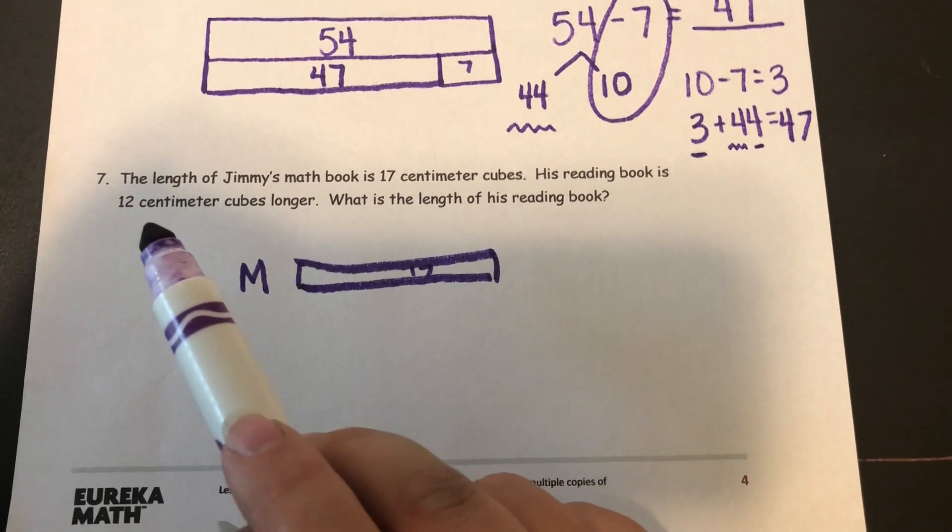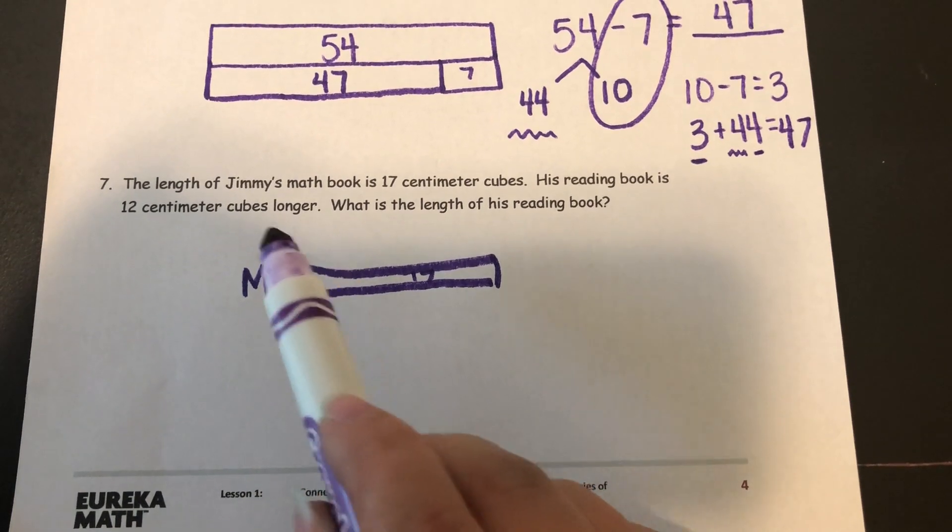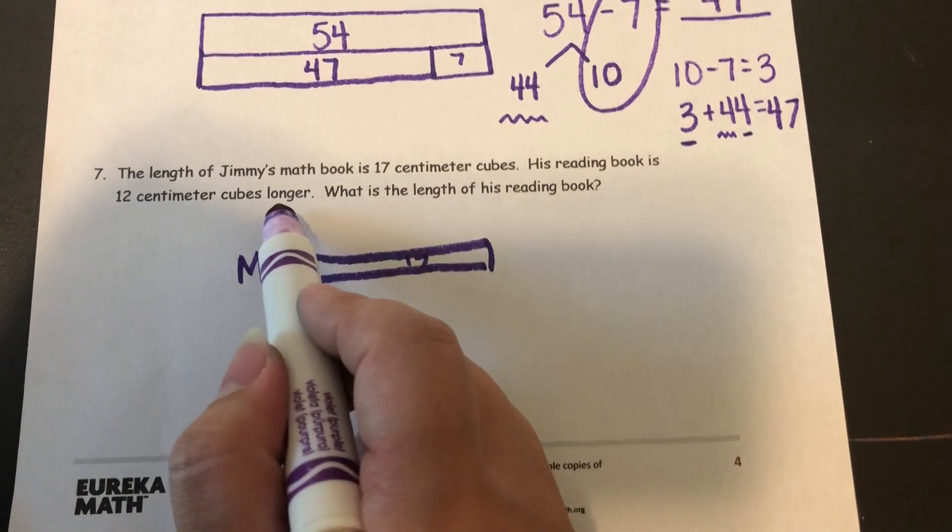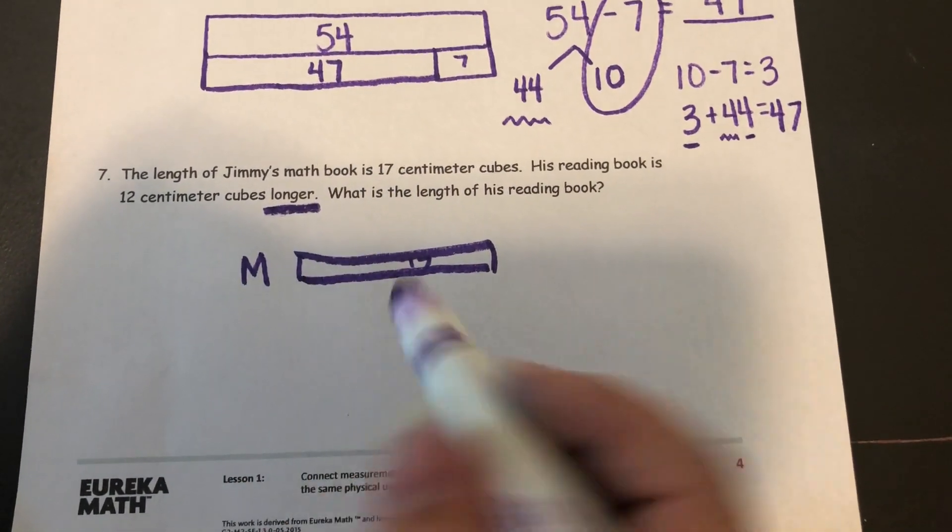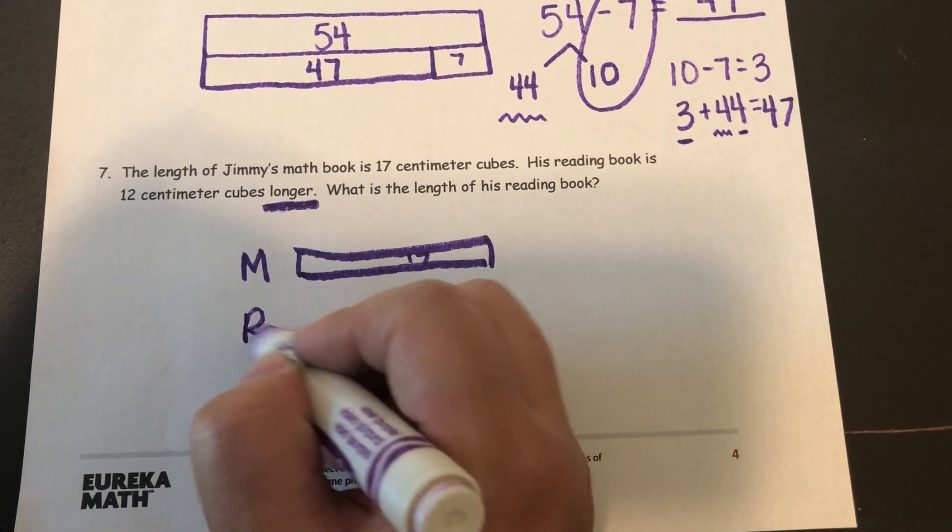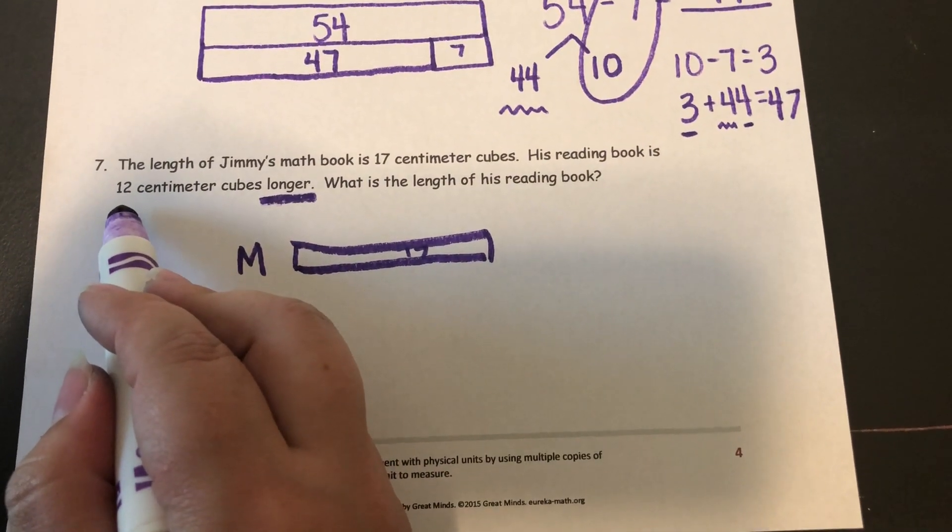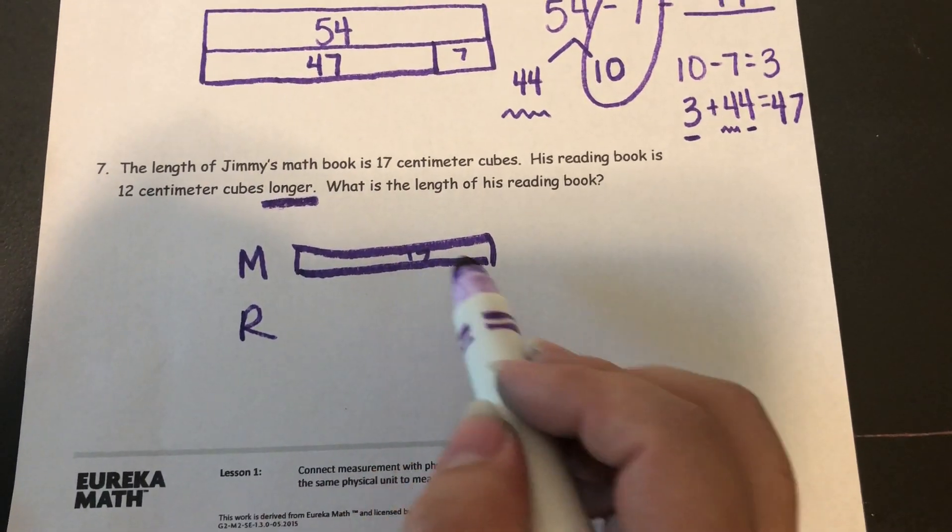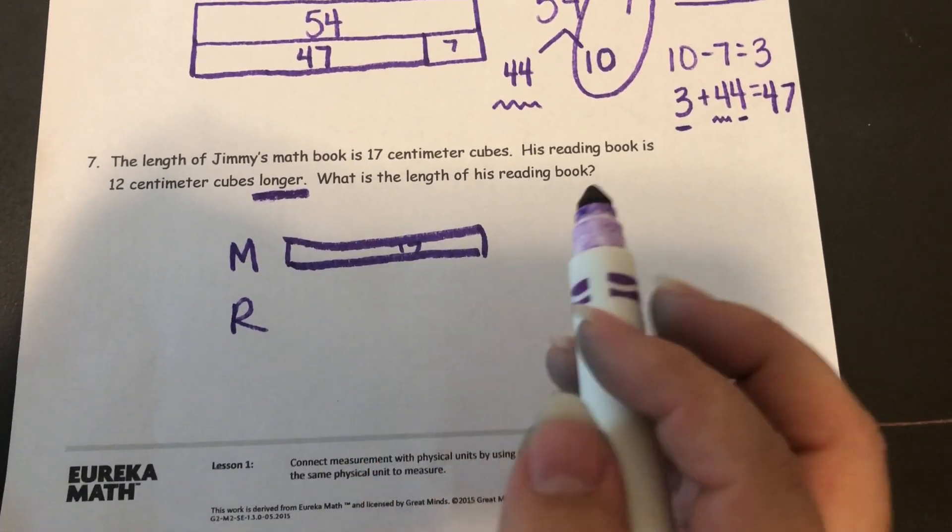His reading book is 12 centimeter cubes longer. So this is an important word, longer. His reading book isn't 12 centimeter cubes long. It's 12 centimeter cubes longer than the math book.